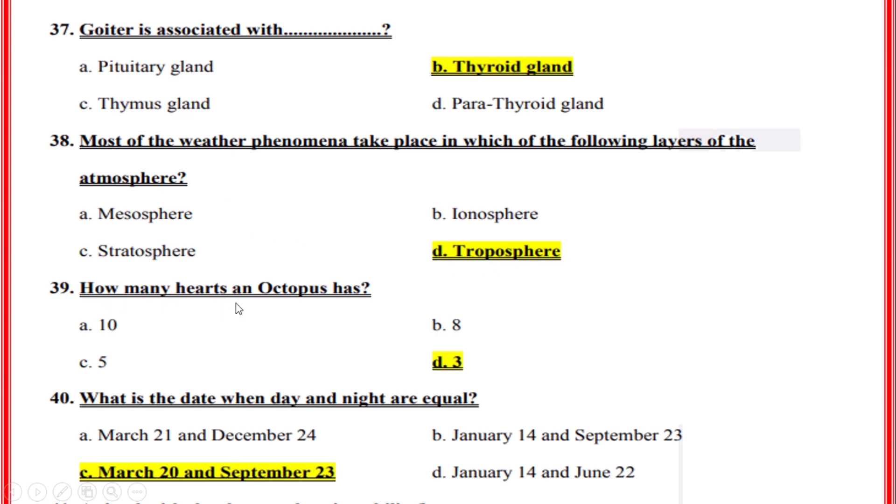How many hearts does an octopus have? Correct option: D, 3.